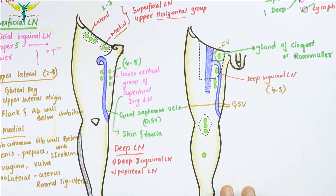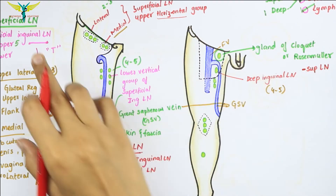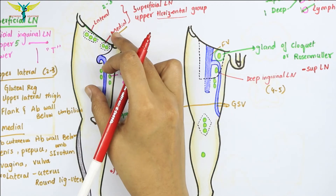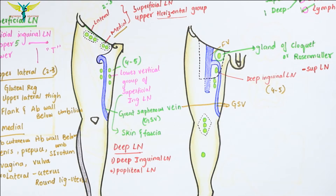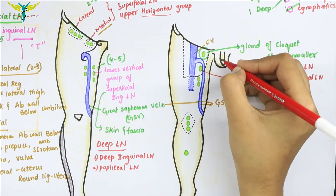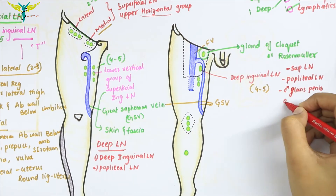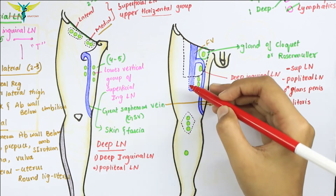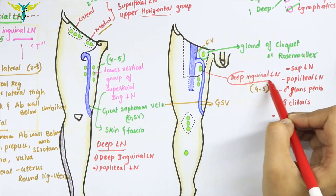These deep lymph nodes receive lymph from the superficial lymph nodes — that means these superficial lymph nodes drain lymph into the deep group of lymph nodes — and also from the popliteal nodes, the glans penis in males, and the clitoris in females. The deep lymphatics from the lower limb which accompany the femoral vein also drain into the deep group of inguinal lymph nodes.